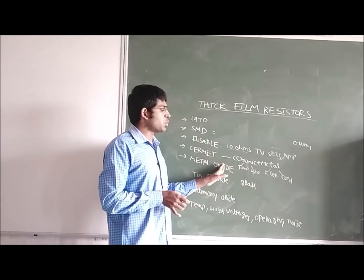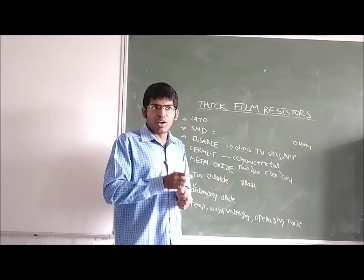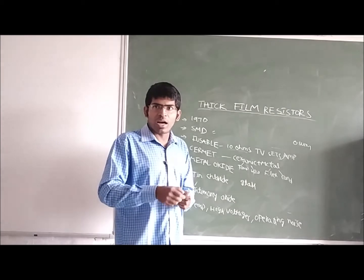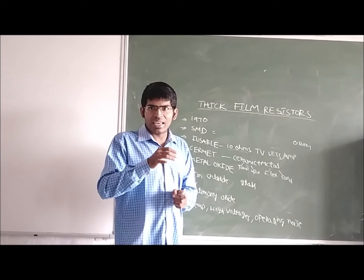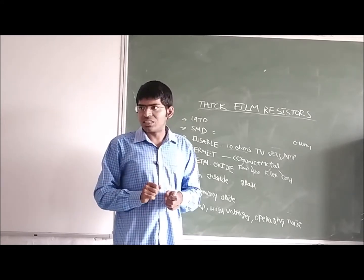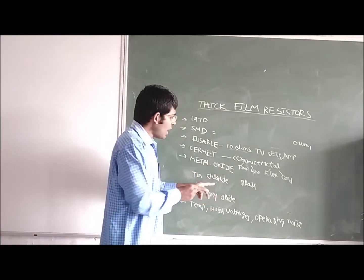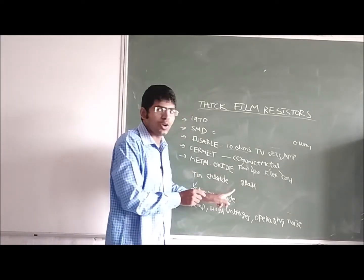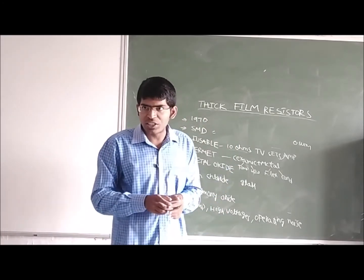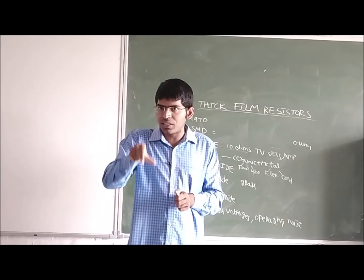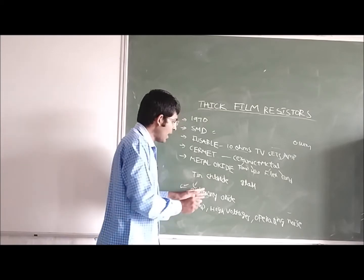The last type is metal oxide. We take tin chloride and deposit it on a glass substrate. We heat the glass, and because of that, tin oxide is formed. To this tin oxide, we add antimony oxide. The amount of antimony oxide we add to the tin oxide decides the resistance value — so the resistance value is determined by the antimony oxide.